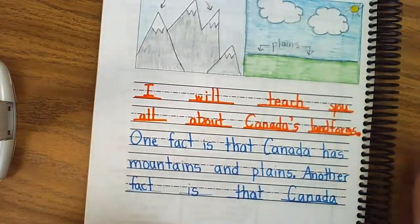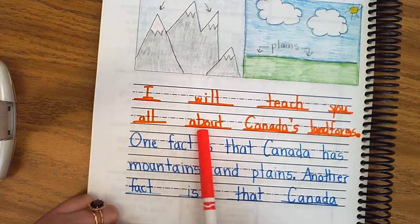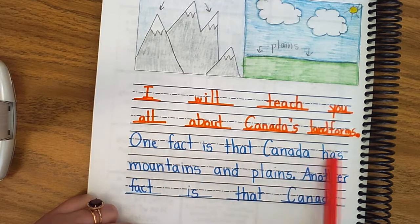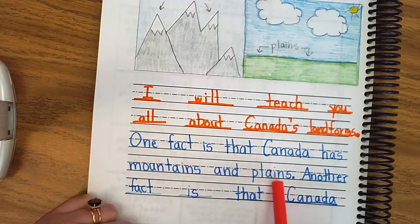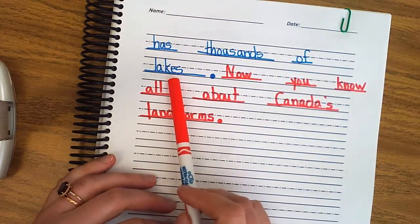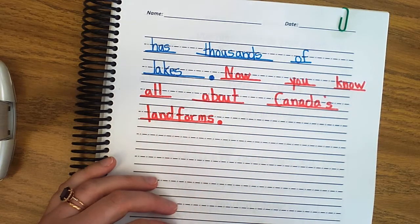Now you can go back and reread your entire beautiful paragraph and admire your work. I will teach you all about Canada's landforms. One fact is that Canada has mountains and plains. Another fact is that Canada has thousands of lakes. Now you know all about Canada's landforms.